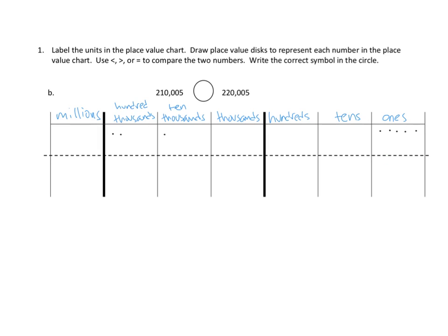Now I'm going to switch to a red pen, and we'll do our second number. Our second number is two hundred and twenty thousand. Zero hundreds, zero tens, and five ones — one, two, three, four, five. Five ones.